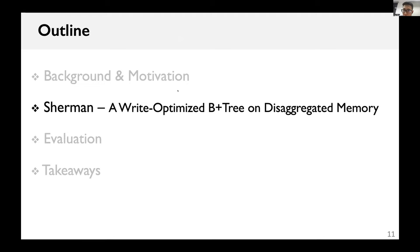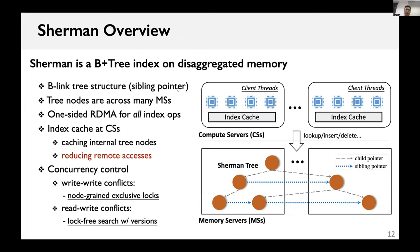Next, we introduce our proposed system: Sherman, a B+ tree on disaggregated memory. The tree index is stored in the memory servers and the compute servers run client threads that access Sherman by RDMA. Like a B-link tree, we record a sibling pointer for every tree node for efficient concurrency. Each compute server maintains an index cache, which caches internal tree nodes. Sherman adopts lock-based write operations and lock-free read operations to resolve read-write conflicts.